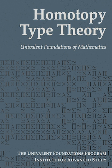HoTT uses a modified version of the propositions-as-types interpretation of type theory, according to which types can also represent propositions and terms can then represent proofs. In HoTT, however, unlike in standard type theory, a special role is played by mere propositions, which, roughly speaking, are those types having at most one term up to propositional equality. These are more like conventional logical propositions than are general types, in that they are proof irrelevant.